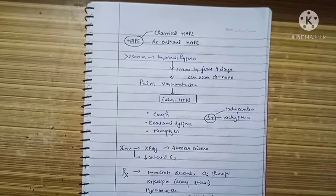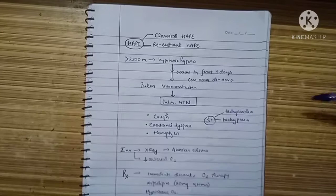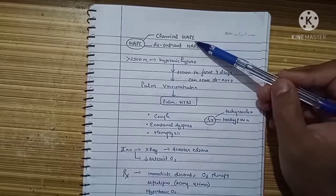Hello everyone. In this video, we're going to talk about some fatal conditions and illnesses of high altitude. We already discussed AMS and CMS. In this video, we'll start with HAPE, that is High Altitude Pulmonary Edema. We have two types of HAPE: classical HAPE and reentrant HAPE.